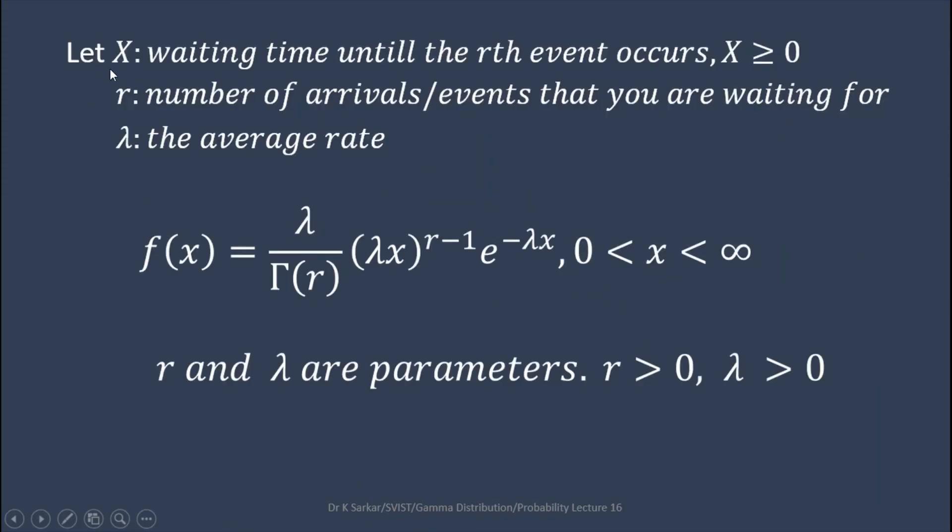If the random variable X is the waiting time until the rth event occurs, where x greater than or equal to 0, r is the number of arrivals or events that you are waiting for, and lambda is the average rate, then the PDF f(x) is lambda by gamma r, lambda x to the power r minus 1, e to the power minus lambda x, where 0 less than x less than infinity. r and lambda are parameters: r greater than 0, lambda greater than 0.